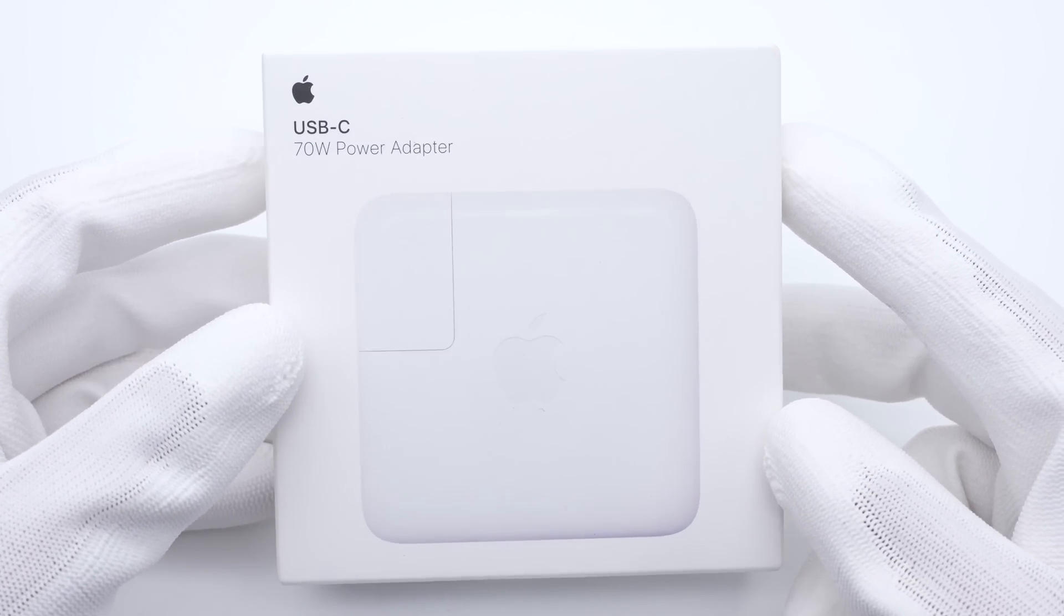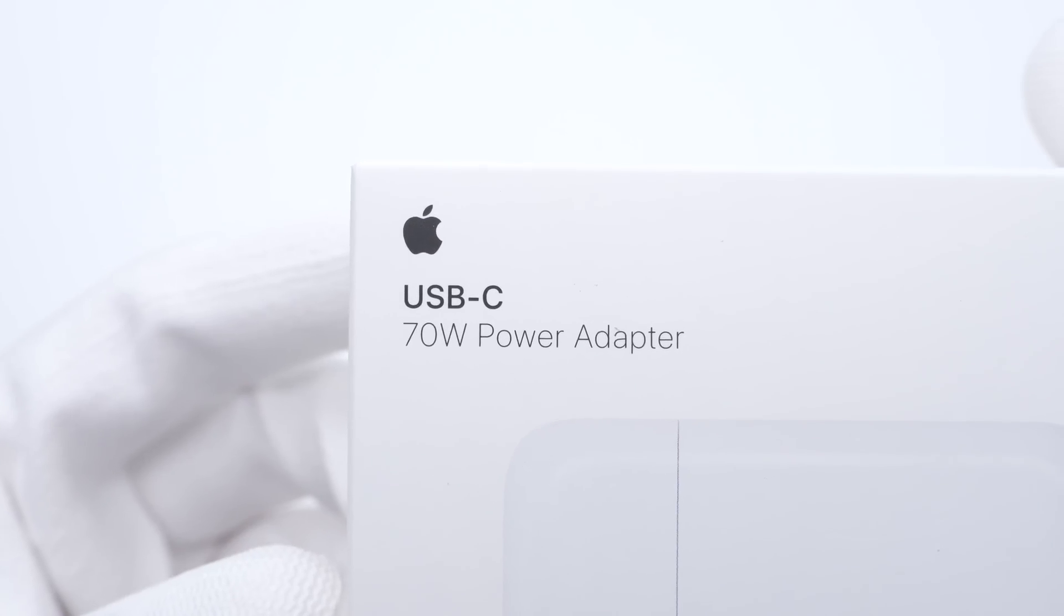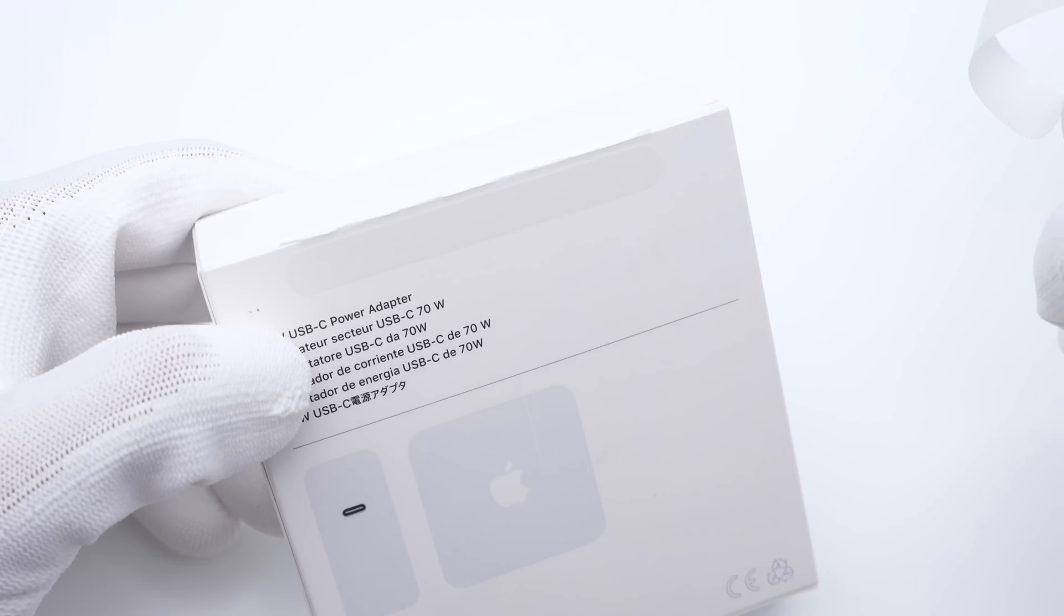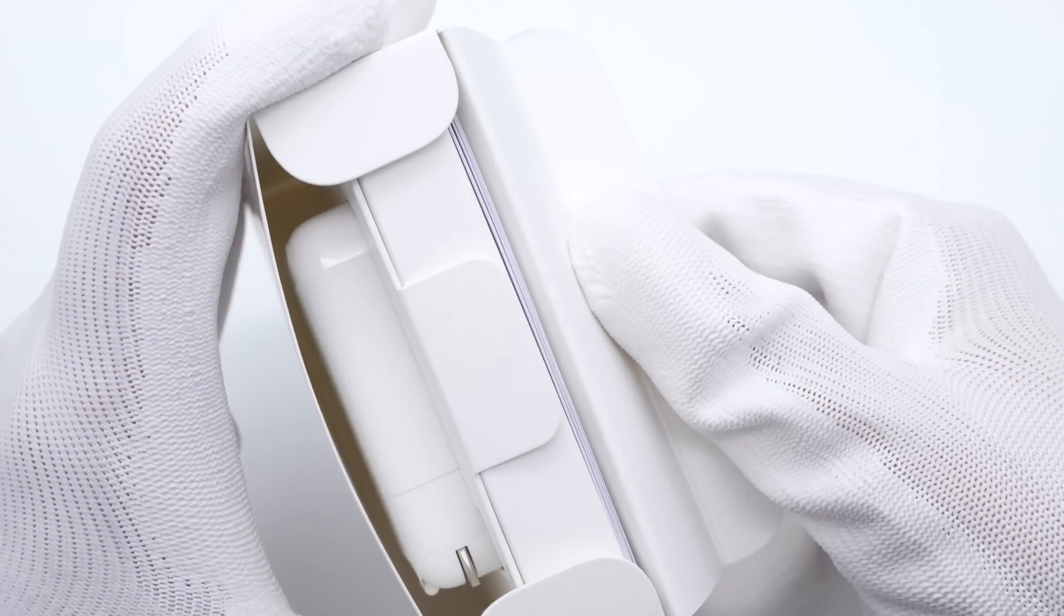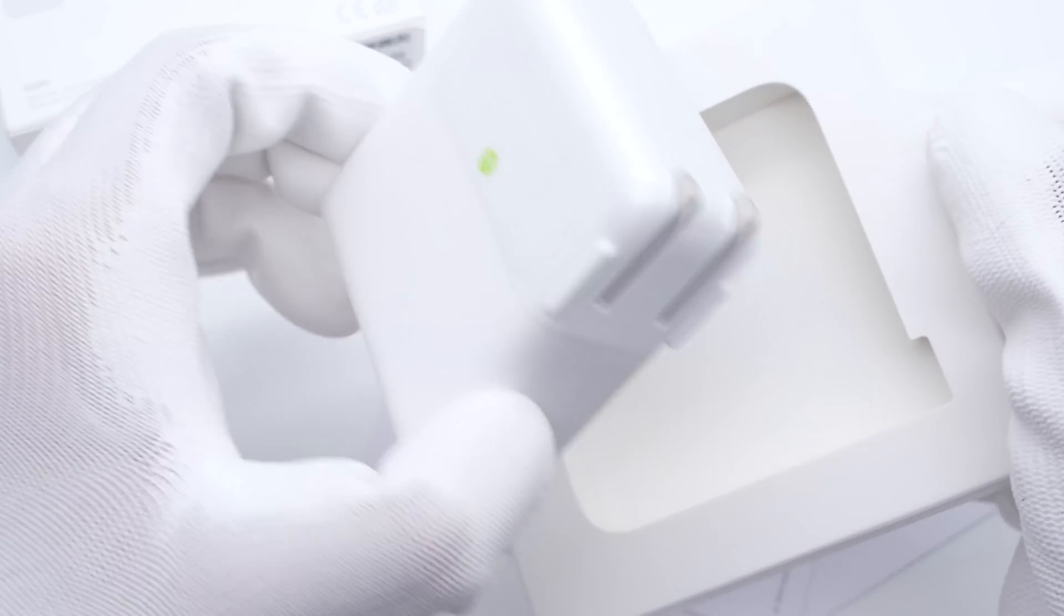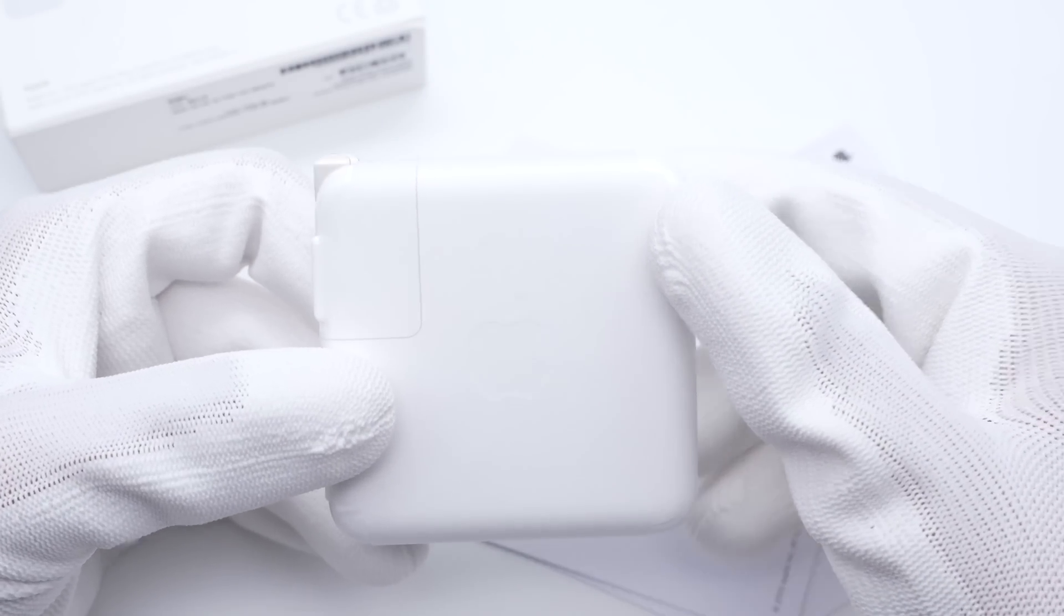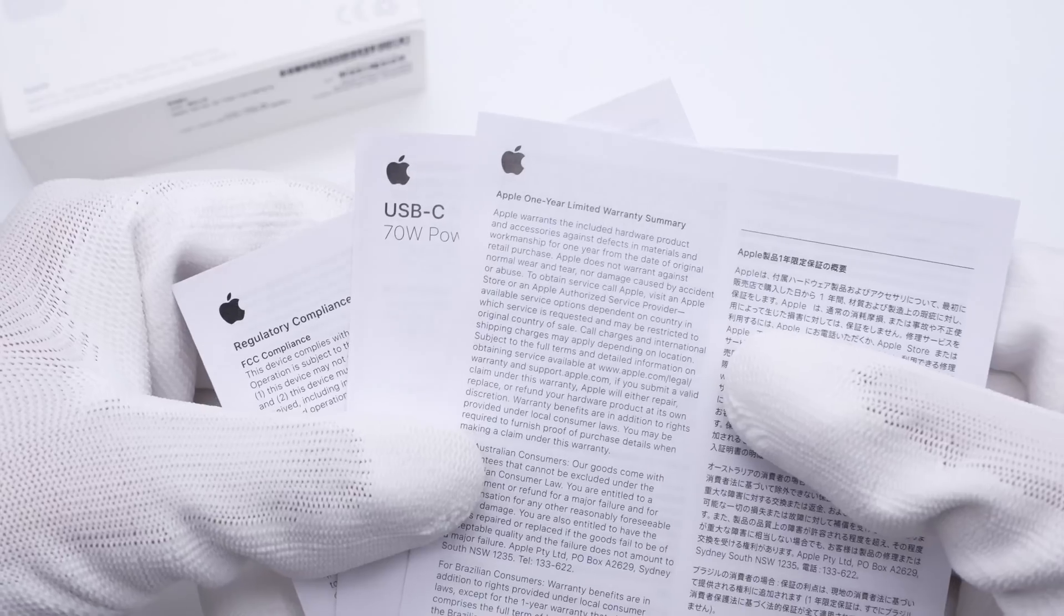The packaging continues Apple's design with the product name in the upper left corner. Let's tear off the sealing strip. Like always, it only contains a charger and some documents without any cable.